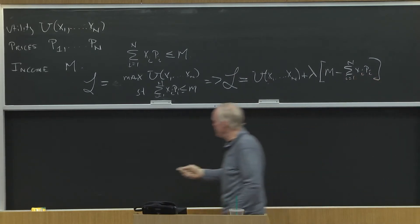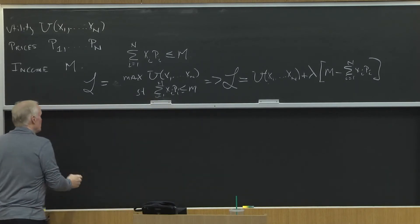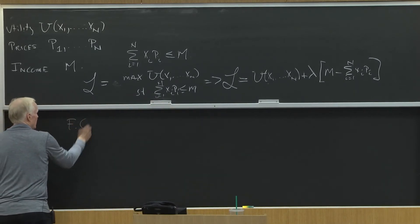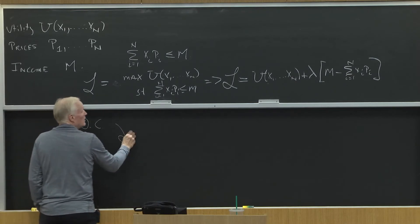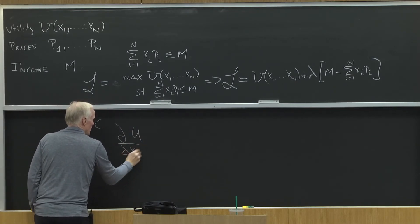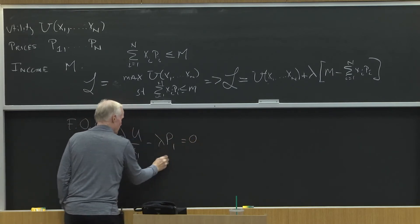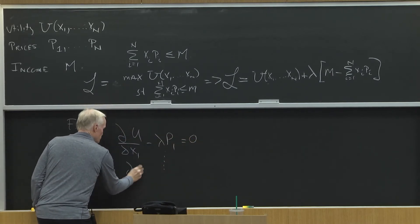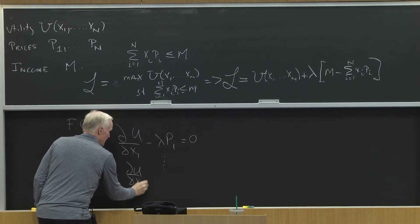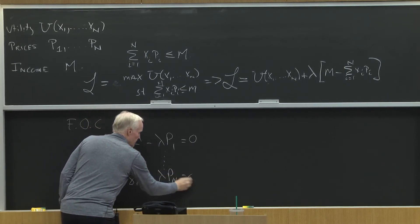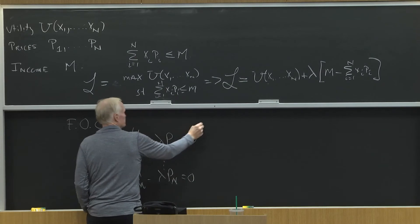Critical point is still the same. Your first-order conditions are partial u partial x1 minus lambda p1 equals 0, down to partial u partial xn minus lambda pn equals 0, and your budget constraint.